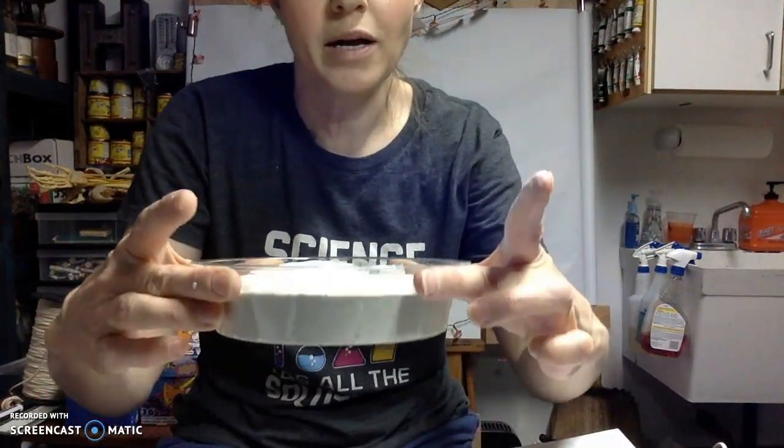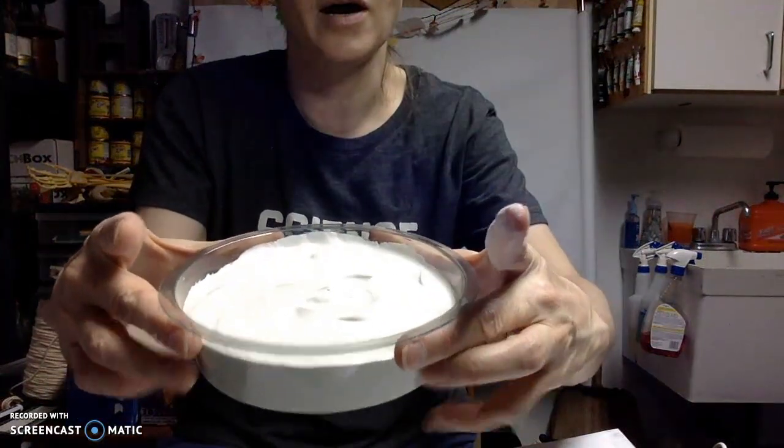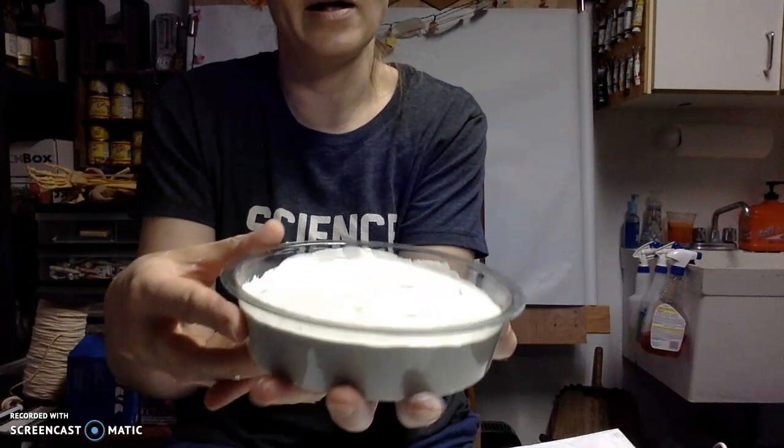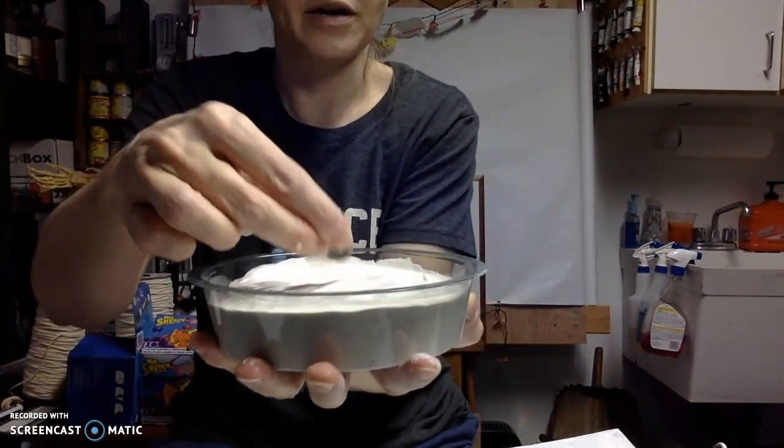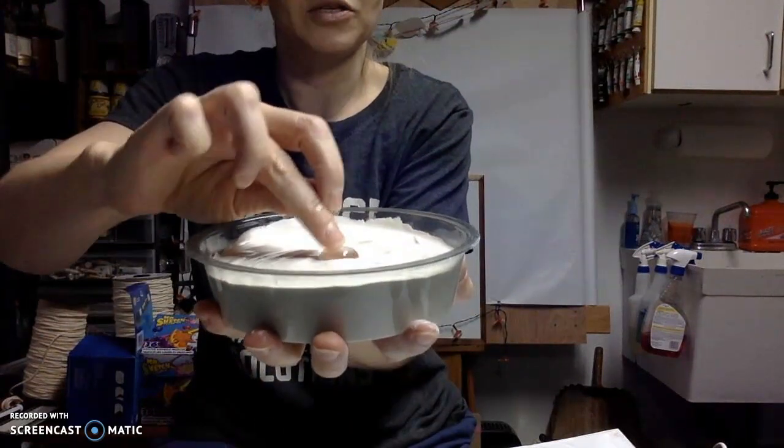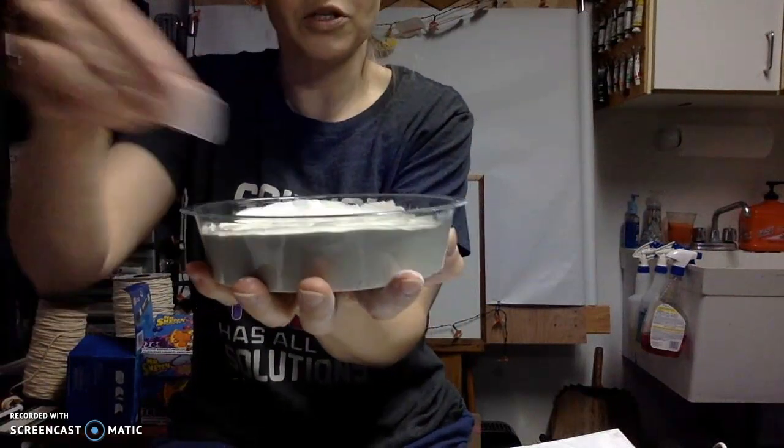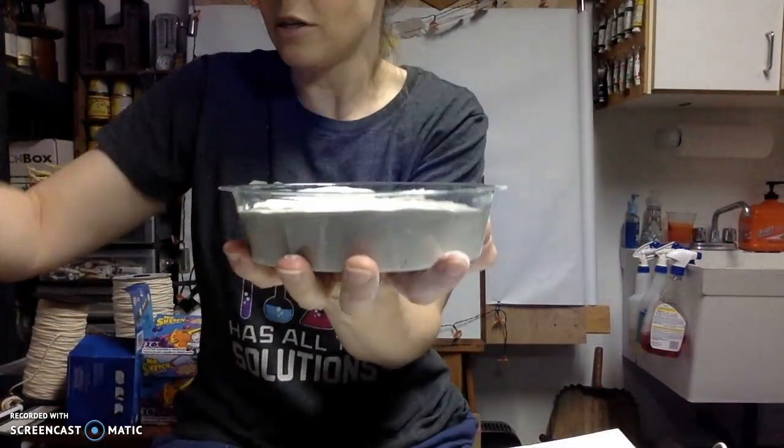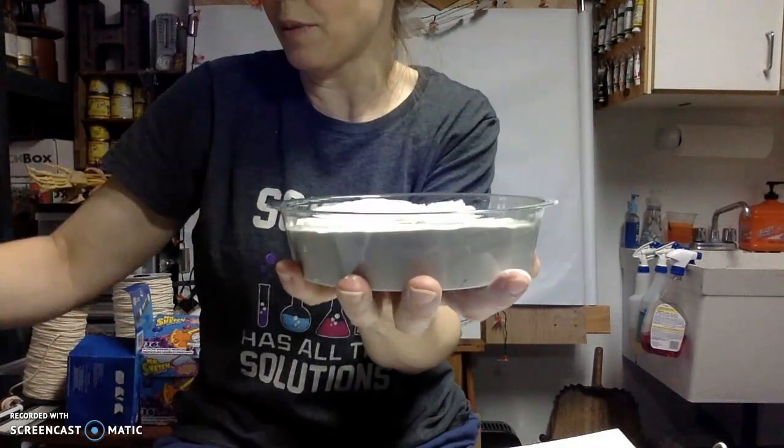So then I took my mixture and I smoothed it out on the top and now I am going to start my design. So I am going to start in the middle. I'm going to take one of my little stones and I'm just going to lay it in the mixture. Don't push it all the way in because if you push it all the way in, it'll sink too far and then you'll lose it forever in your plaster.